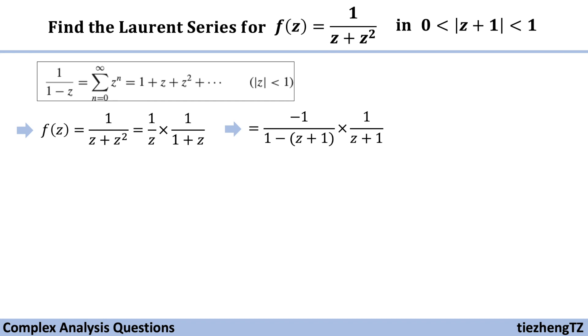So next we can just substitute. And we have 1 over z plus 1 times negative sum, n starts from 0 to infinite, (z plus 1) to the power of n.